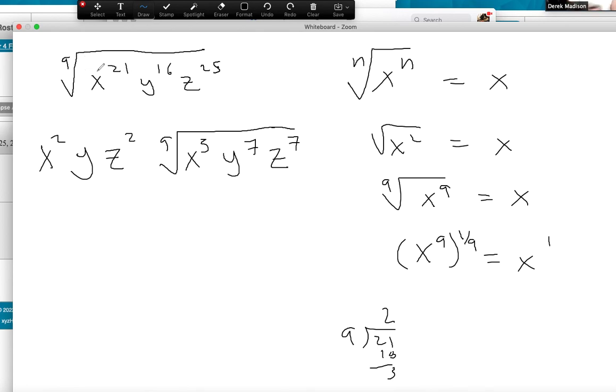So it's the exact same process no matter what that index. We're just using division to figure out what we're able to simplify out and what the remainder would be.